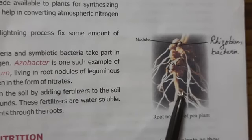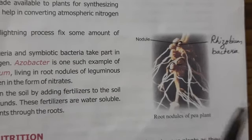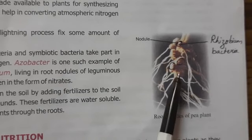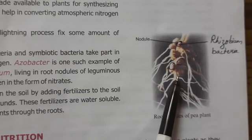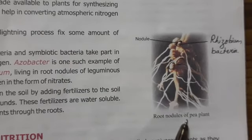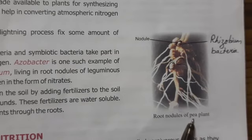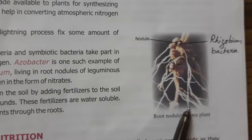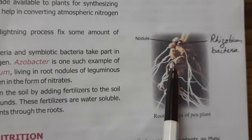Examples of leguminous plants are pea plant, groundnut, and beans. They are called leguminous because their roots have nodules, and inside these nodules lives the rhizobium bacteria.